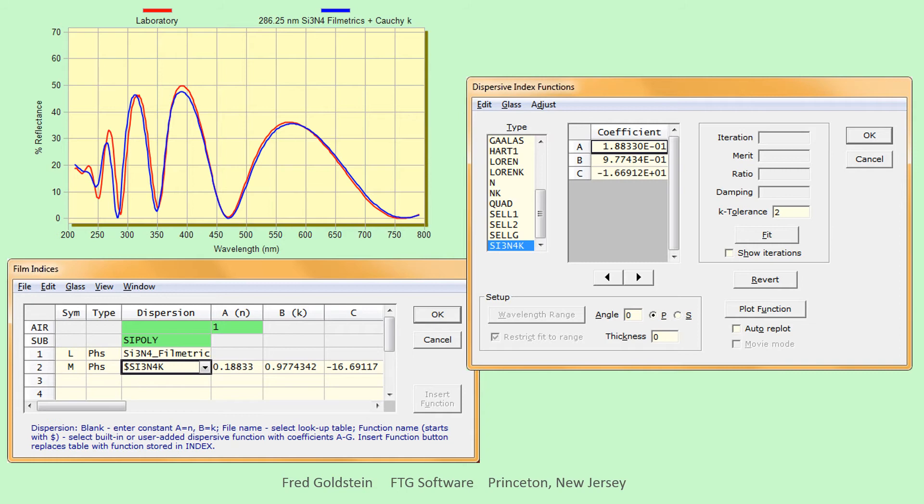Starting with coefficients ABC and thickness determined interactively, damped least squares refinement leads to quite good agreement as shown here. While in general both reflection and transmission measurements are required to deduce N and K, in general does not mean always.